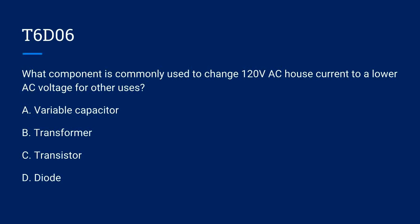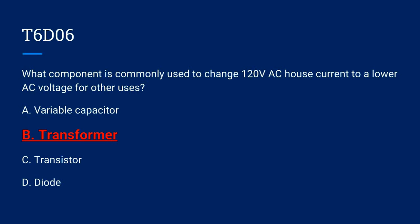T6D06. What component is commonly used to change 120 volt AC house current to a lower AC voltage for other uses? A. Variable capacitor. B. Transformer. C. Transistor. Or D. Diode. The correct answer is B. Transformer.